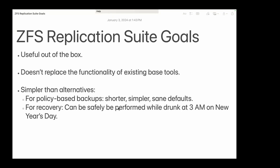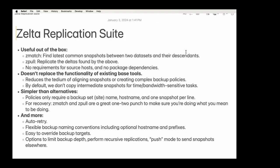Sanoid and zrepl are policy-based systems where you can program each individual snapshot exactly — that's not what I need. I just want to collect everything and put it in a clearer place. So I wrote the zelta suite. It started as a couple of tools to diff between two sets of snapshots — a source and a target — and then replicate. I decided it was different enough to publish to GitHub, and over the last two weeks I added features and refactored it.